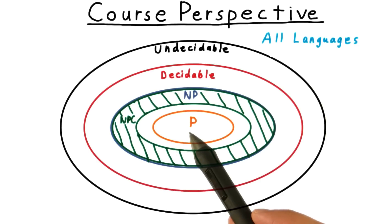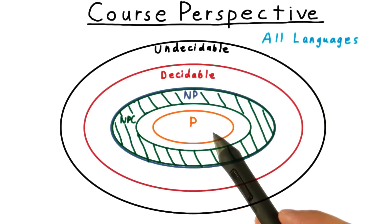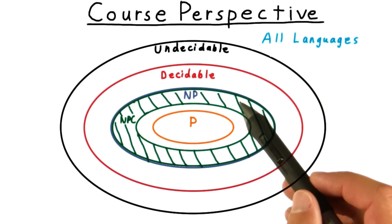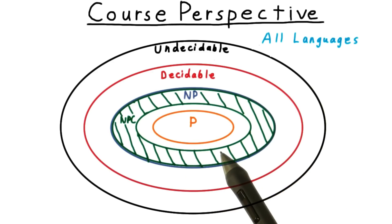If any one of these turned out to be polynomial, then P would expand and swallow all of NP. Or equivalently, we can think of NP collapsing down into this class P.